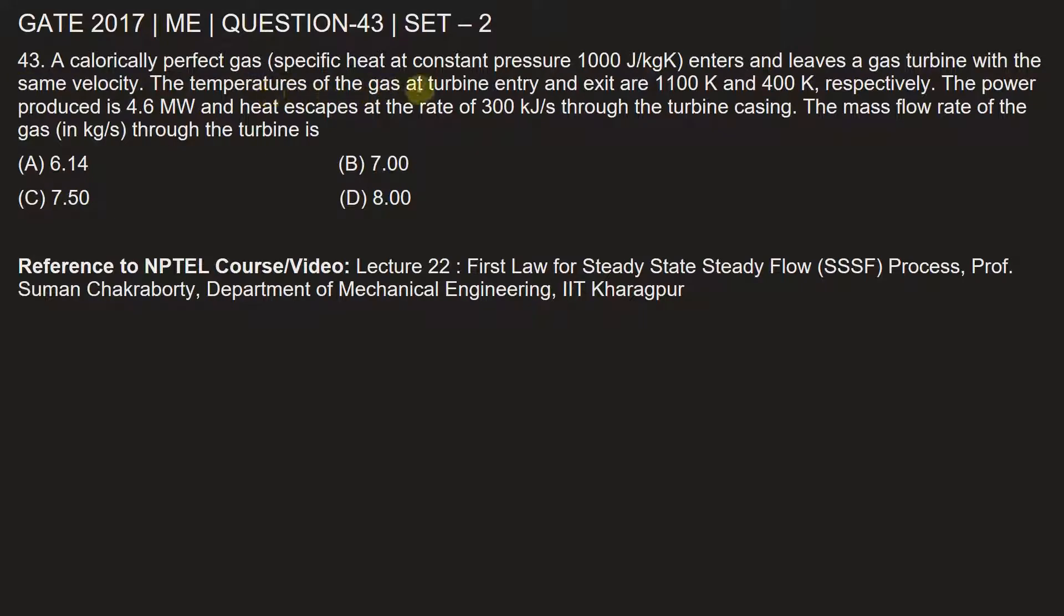The temperatures of the gas at turbine entry and exit are 1100 Kelvin and 400 Kelvin respectively. The power produced is 4.6 megawatt and heat escapes at the rate of 300 kilojoule per second through the turbine casing. The mass flow rate of the gas through the turbine is, so we need to find the mass flow rate of the gas in kilogram per second.